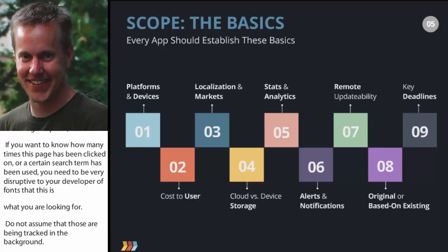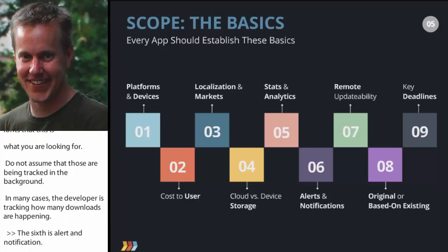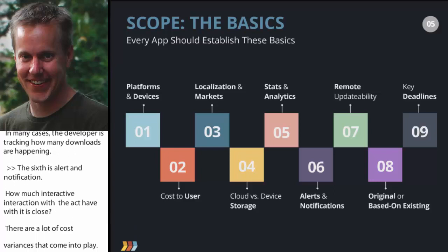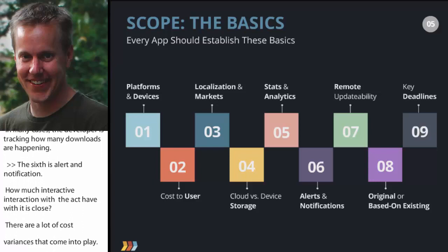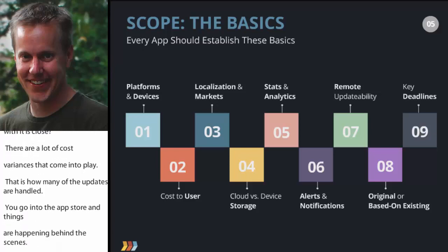The sixth is alerts and notifications — how much interaction does the app need when it is closed? Are there things the user needs to be alerted about when the app is in the background? There can be significant cost variances here. The seventh is remote updatability — are there pages in the app you want to be able to update separate from a full app update? What pieces of your app need to be updated periodically without going through a full app store update?